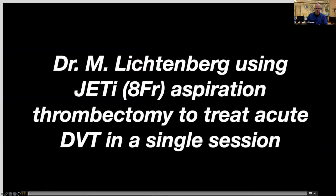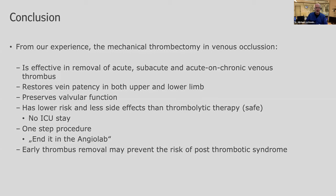We don't yet have comparison data for all these new devices. From my perspective, mechanical thrombectomy for venous occlusions is very effective for acute, subacute, and acute-on-chronic venous thrombosis, including stent thrombosis. It restores vein patency in many indications including the upper limb, preserves valvular function, and has a low risk profile compared to thrombolytic therapy. You don't need to send the patient to the ICU — you end the case on the table within one to two hours as a one-step procedure in the angio lab, preventing post-thrombotic syndrome. Thank you very much.